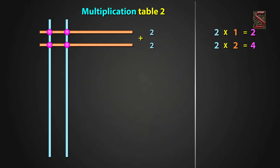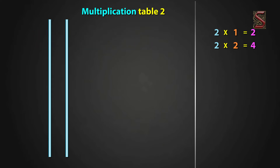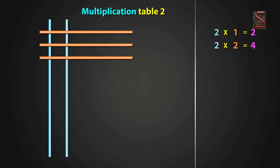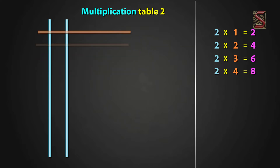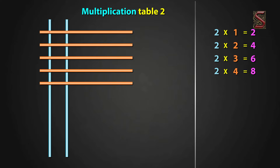Now, for 2 three times, draw 3 sleeping lines. We have 6 meeting points. And 2 three times is equal to 6. 2 four times, draw 4 sleeping lines. We have 8 meeting points. And 2 four times is equal to 8. 2 five times, draw 5 sleeping lines. We have 10 meeting points. Now, 2 five times is equal to 10.